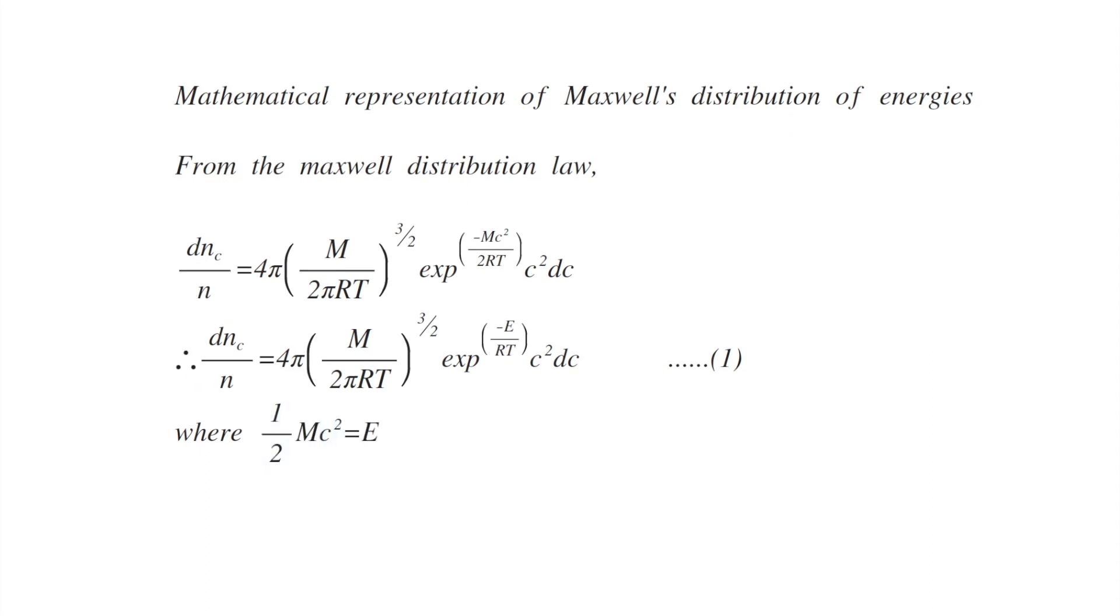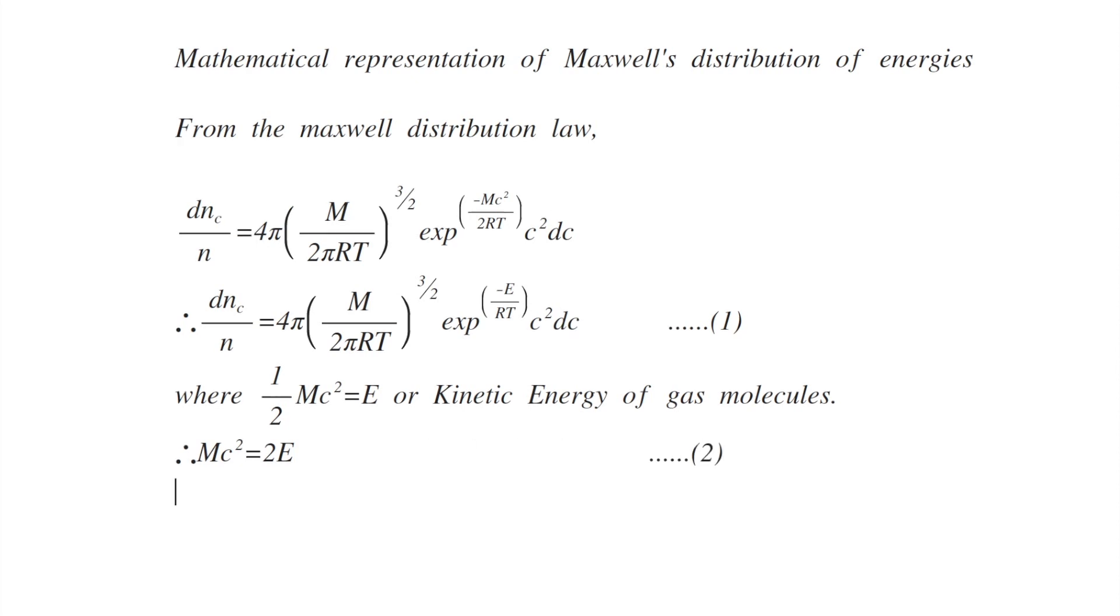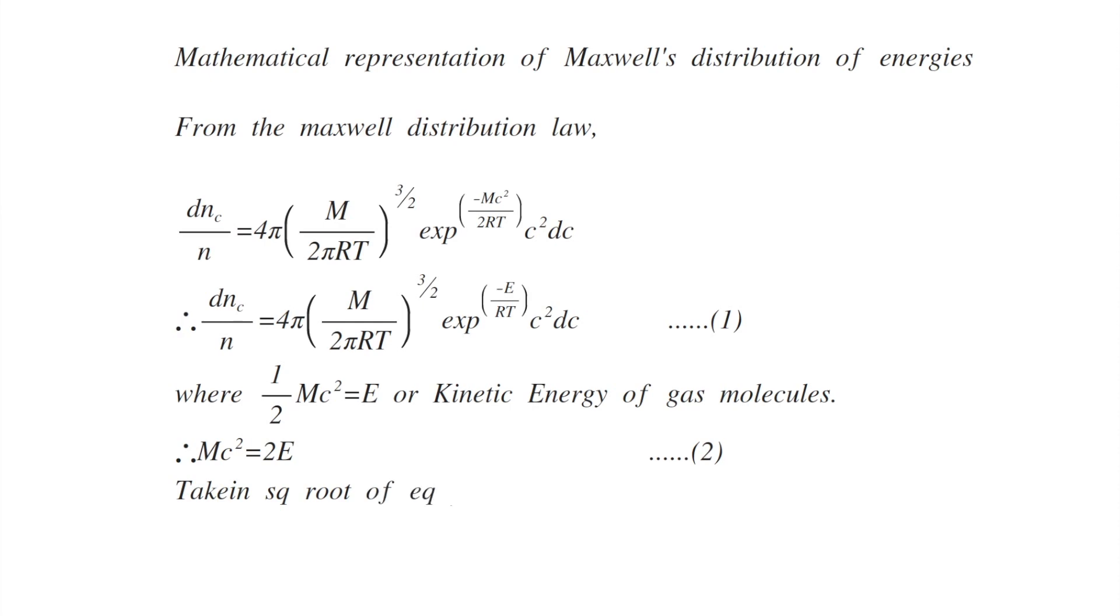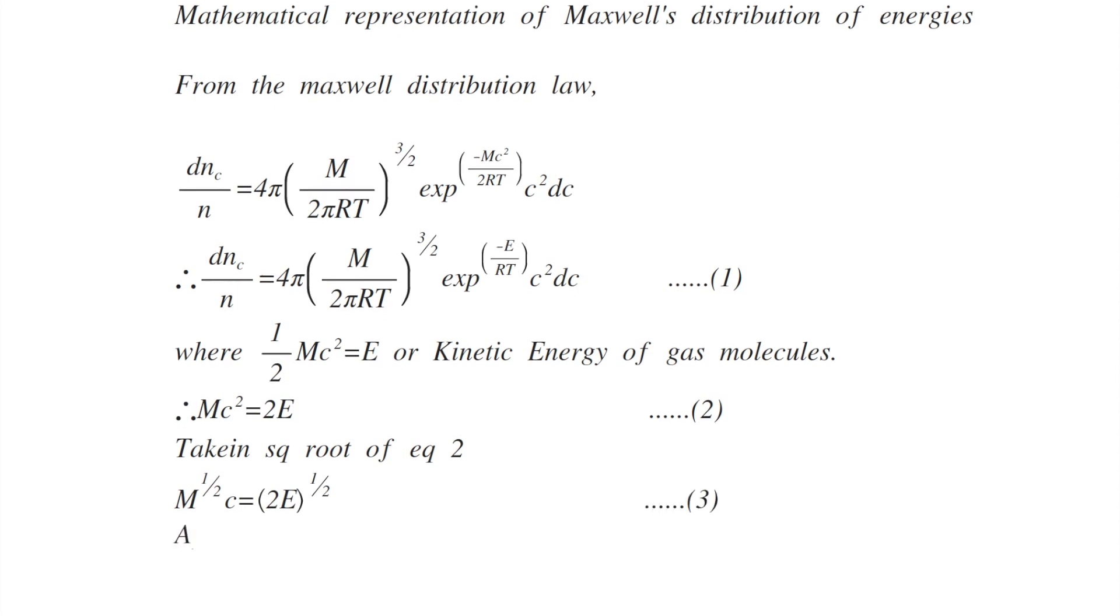where E equals half of mc square is the kinetic energy of the gas molecules. Therefore mc square is equals to 2E, this is equation number 2. Taking square root of equation number 2 we get m to the power half c equals 2E to the power half, this is equation number 3.